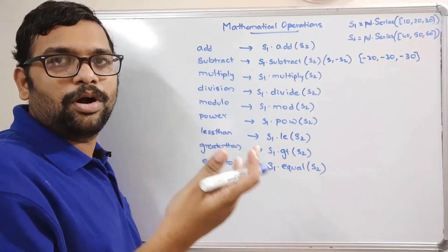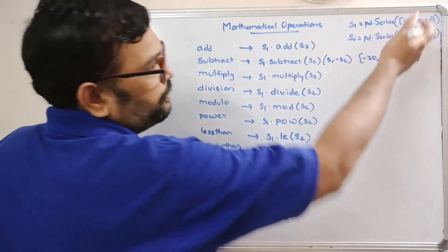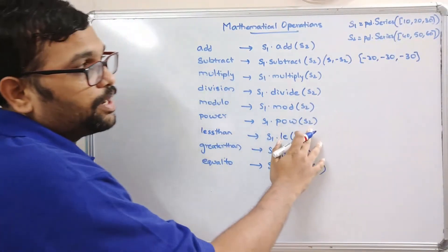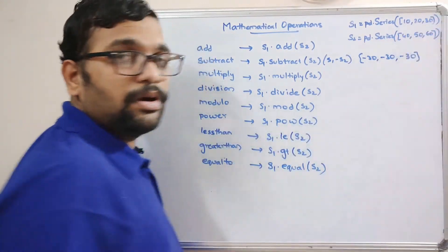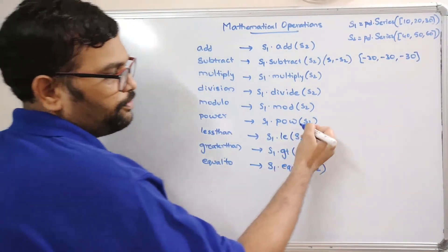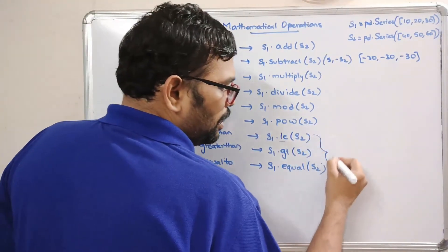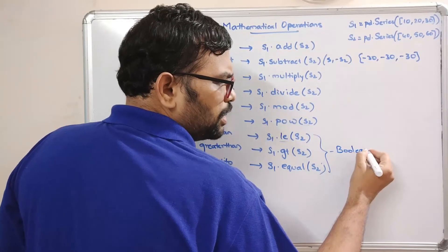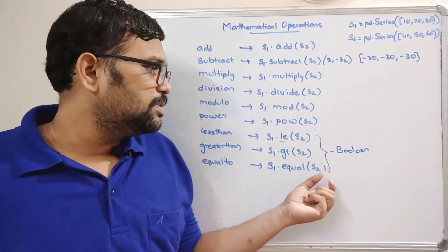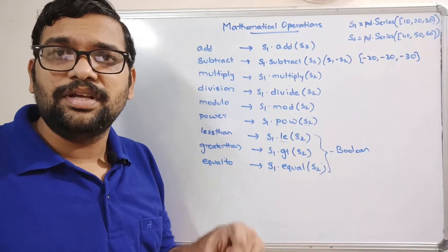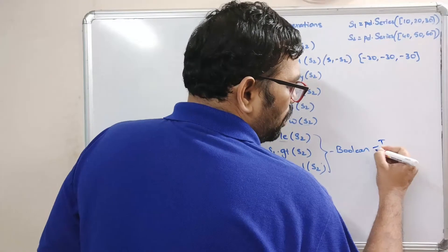For modulo: if a is smaller than b, the result will be a itself, so 10, 20, 30 will be the result. For power: s1.power(s2) means 10 to the power 40, 20 to the power 50, 30 to the power 60. The relational operators — less than, greater than, equal to — always give a boolean result, either true or false.